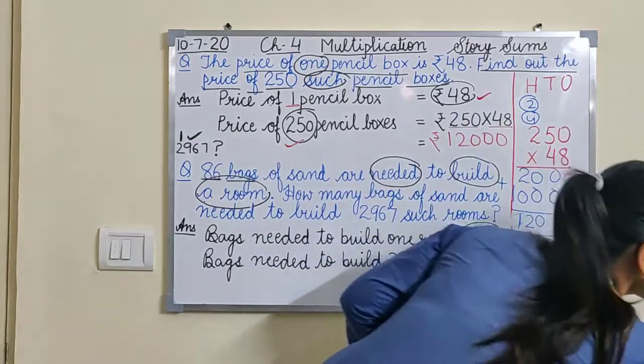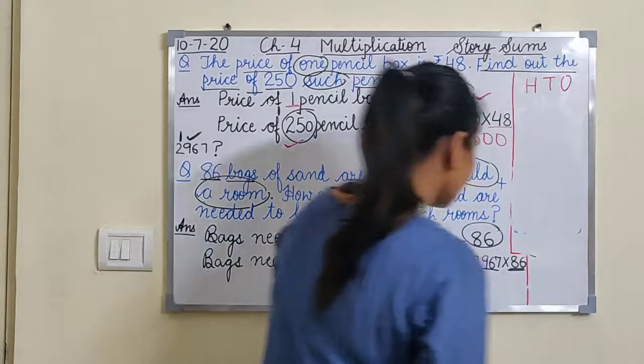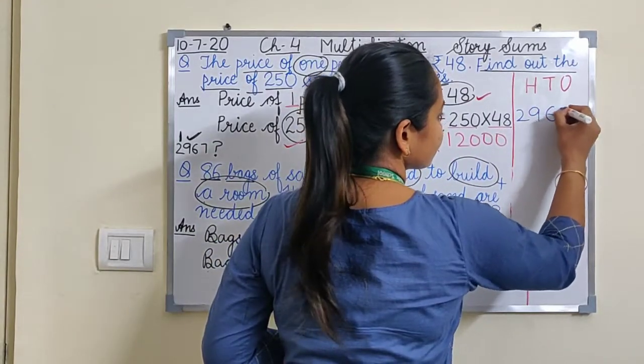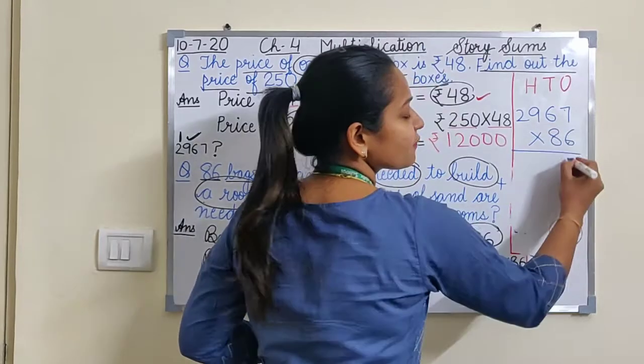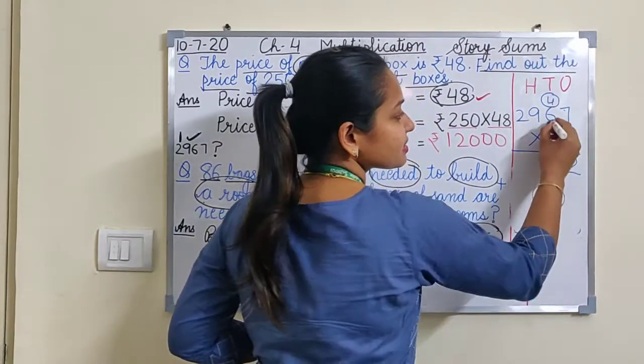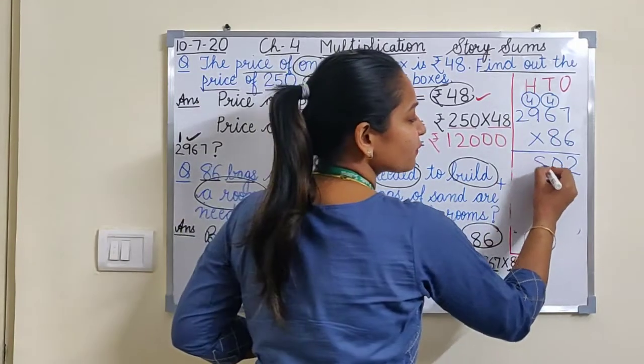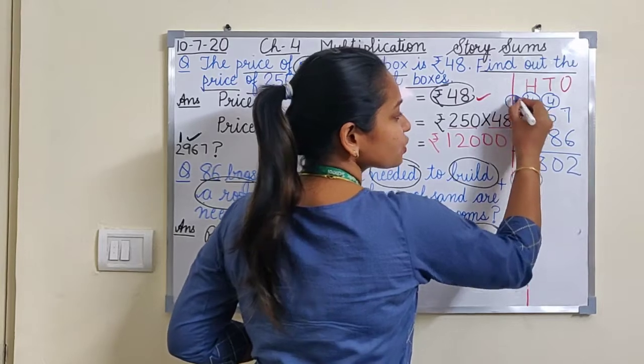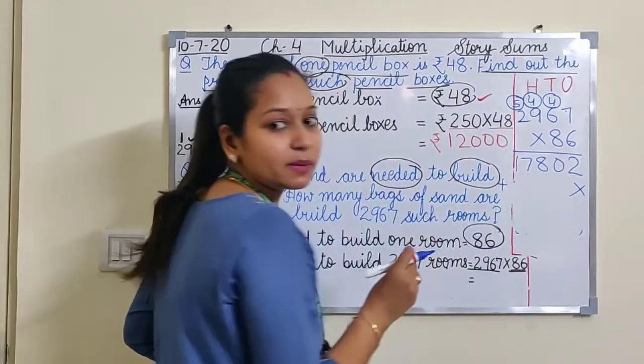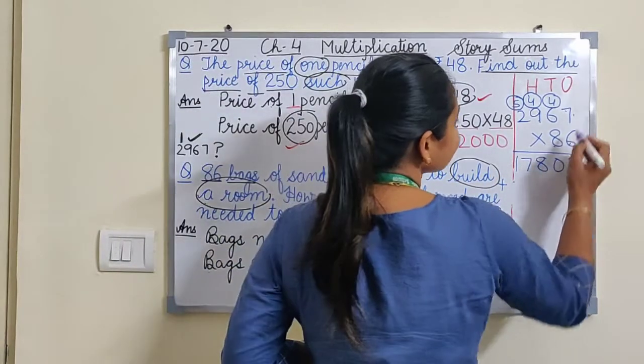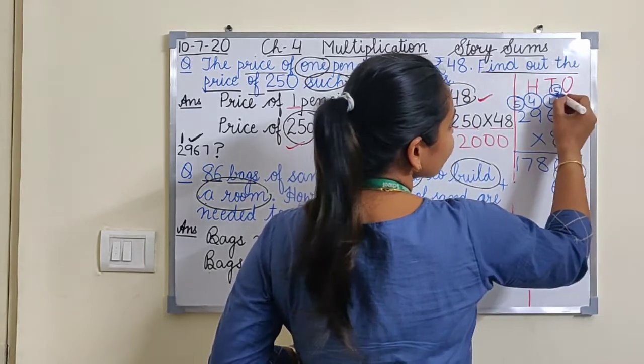So let's do multiplication here. 2,967 into 86. 6 sevens are 42, 2 here 4 carry, 6 sixes are 36 plus 4 is 40, 4 carry, 6 nines are 54 plus 4 is 58, 6 twos are 12 plus 5 is 17. In next line we will put a cross here. 8 sevens are 56, 6 here 5 carry, 8 sixes are 48 plus 5 is 53.